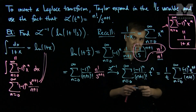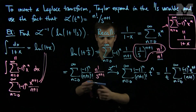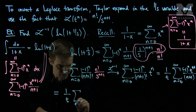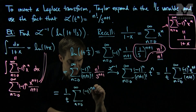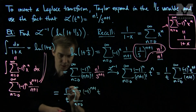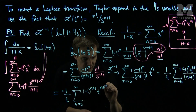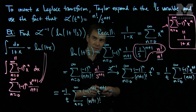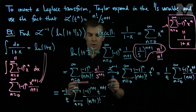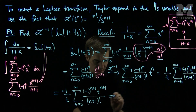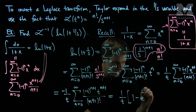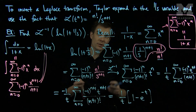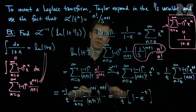This looks close to e to the negative t, but the index is off. So I will shift the index. When I shift the index, I see that this is 1 over t times the sum, n goes from 0 to infinity, of negative 1 to the n plus 1, which adds an extra negative sign, so I will pull a negative sign out to compensate. This is the Taylor expansion of e to the negative t shifted over by 1 unit. So what I have is 1 over t times 1 minus e to the negative t, to account for the fact that the index starts at 0 and shifts over to 1. By inverse Laplace transforming the power series, I was able to find the inverse Laplace transform of a non-standard function.